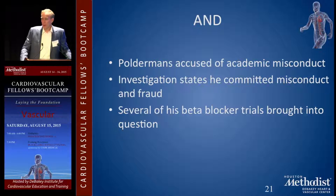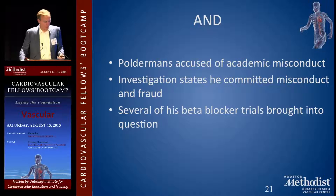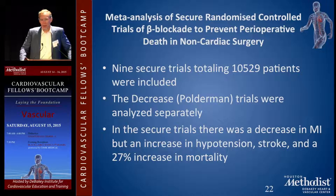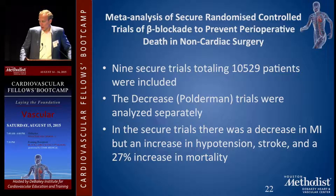Then Poldermans, the guy who did one of the original trials, was accused of academic misconduct, and several of his beta blocker trials were brought into question. They said we've got a problem — we built these guidelines on beta blockers and this guy is controversial. So they looked at nine secure trials totaling 10,000 patients, removed the ones where he was involved, and most of the data went away. In the secure trials, there was a decrease in MI, but again there was an increase in hypotension, stroke, and a 27% increase in mortality.